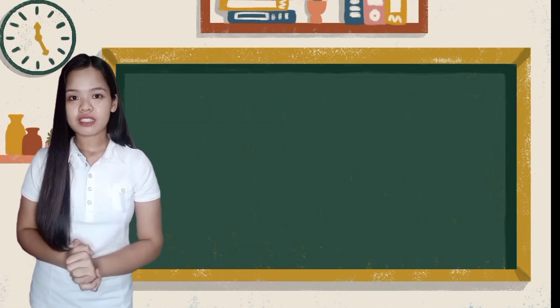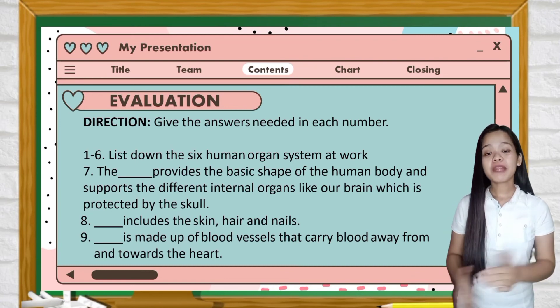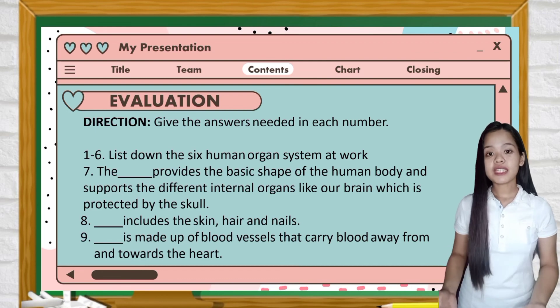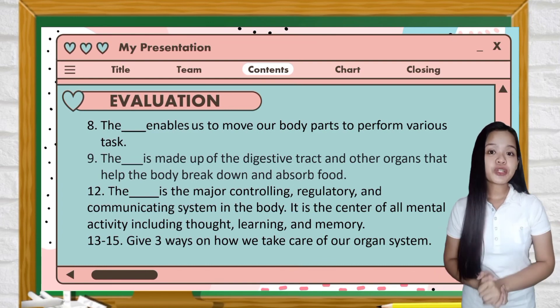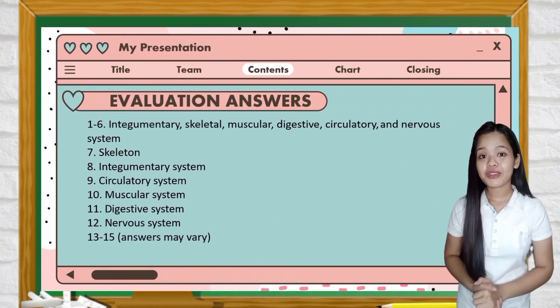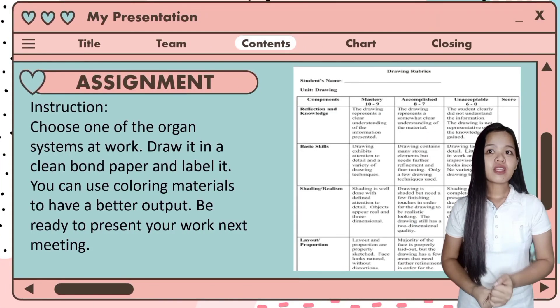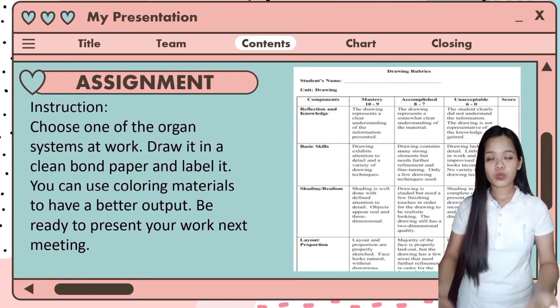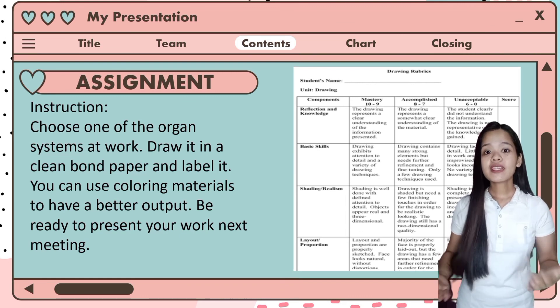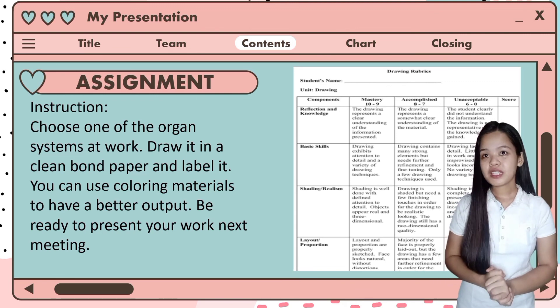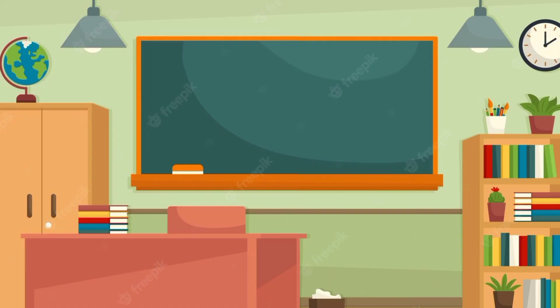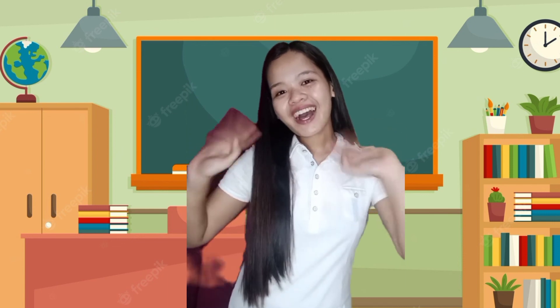Let's have an activity to see if you really understand the lesson. I will give you 10 minutes. In this activity, give the answers needed in each question. Okay, let's check your work. Here is your assignment together with the rubrics — you have to choose one of the organ systems at work, draw it on a clean bond paper, and label it. You can use coloring materials for a better output and be ready to present your work next meeting. That ends our discussion. I am hoping that you learned something new. Thank you and goodbye! See you in our next meeting!